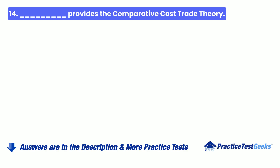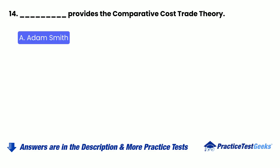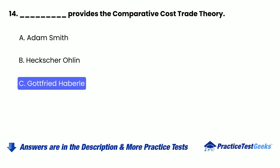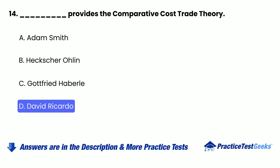Question 14: Blank provides the comparative cost trade theory — A. Adam Smith, B. Heckscher Oline, C. Gottfried Haberl, D. David Ricardo.